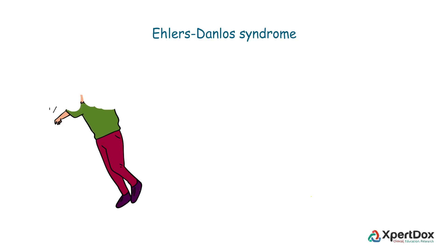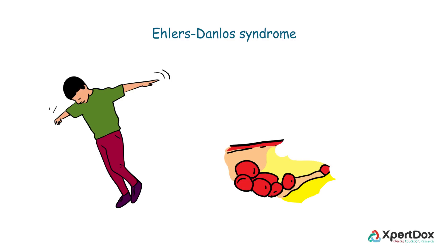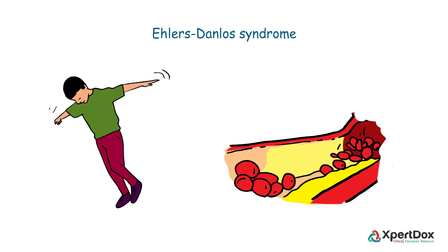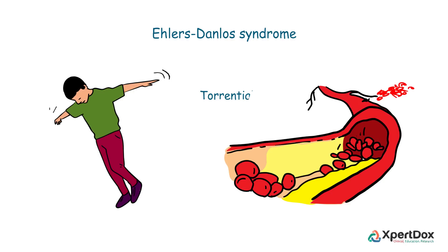The condition is mild in some people, causing only slight clumsiness and looseness of joints, while in others, blood vessels of vital organs can tear, leading to torrential internal bleeding, which can be fatal.